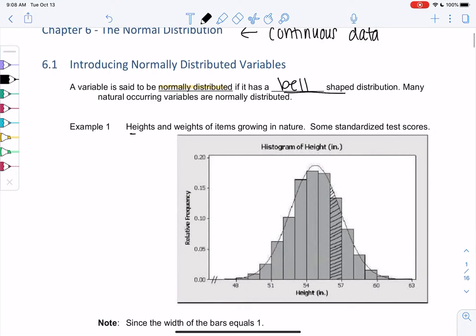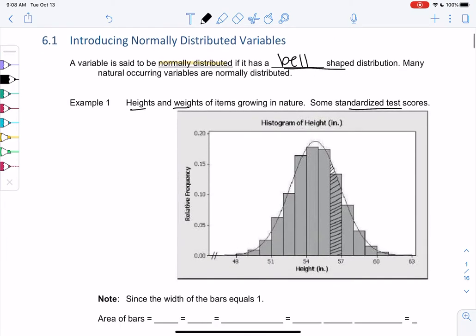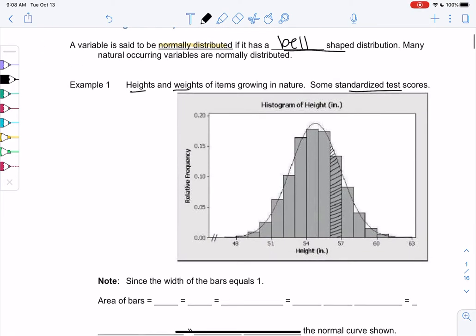One example might be heights or weights of things growing in nature. That's really common for normal. Some standardized tests are a normal curve, and it looks something like this. So it's because of random variation, but overall it's kind of a bell shape. We have the histogram of height and relative frequency, and it makes somewhat of a bell shape.